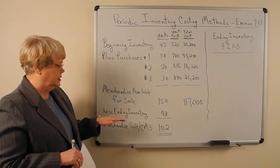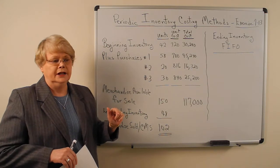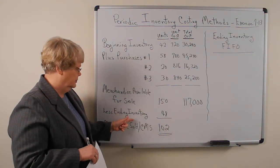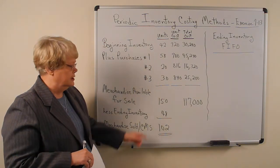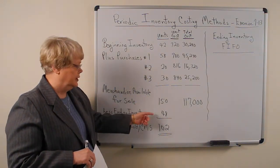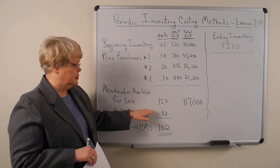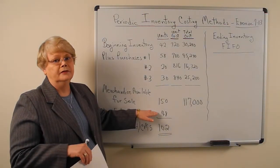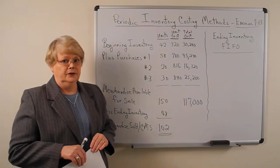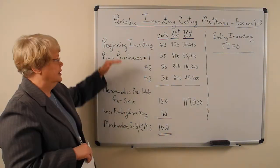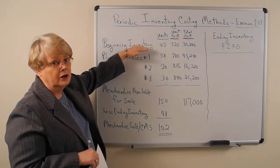In the textbook, I'm using exercise 7-13. In that exercise, it tells us that we have an ending inventory of 48 units. So we know that if we had 150 to start with and we have 48 left, we sold 102. Now if we're using FIFO, FIFO assumes that the first items that came in are the first items that are sold. So these items up here are gone.